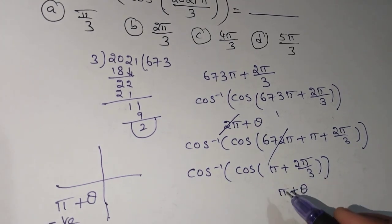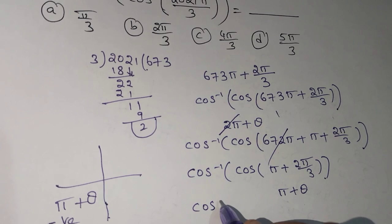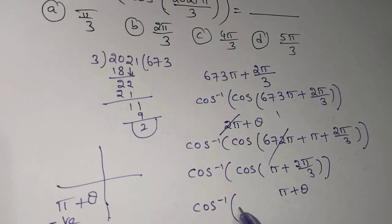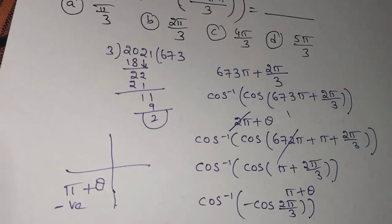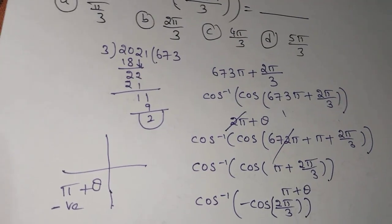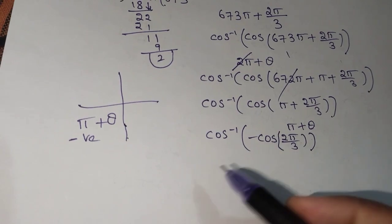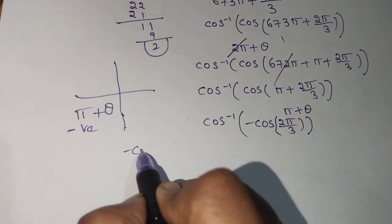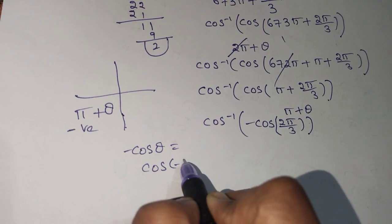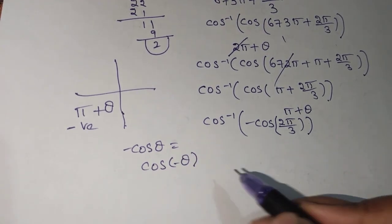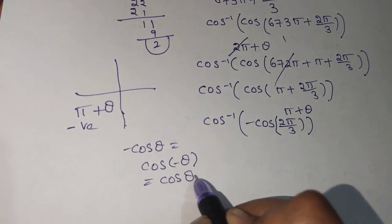So when we see here the cos cos is negative, so we write cos inverse of minus cos θ, where θ is 2π/3. We know minus cos θ equals cos of minus θ, we can write like this.